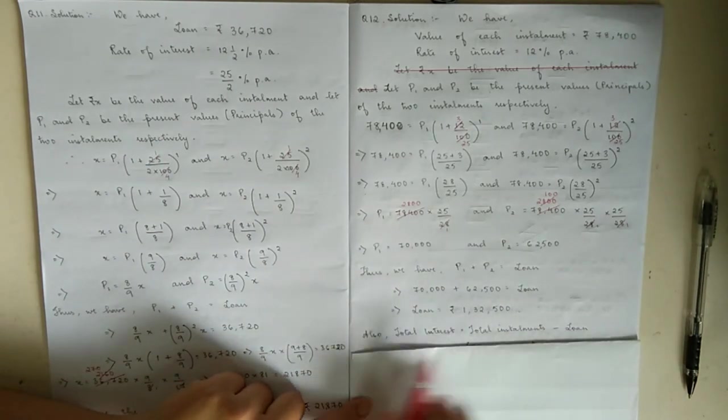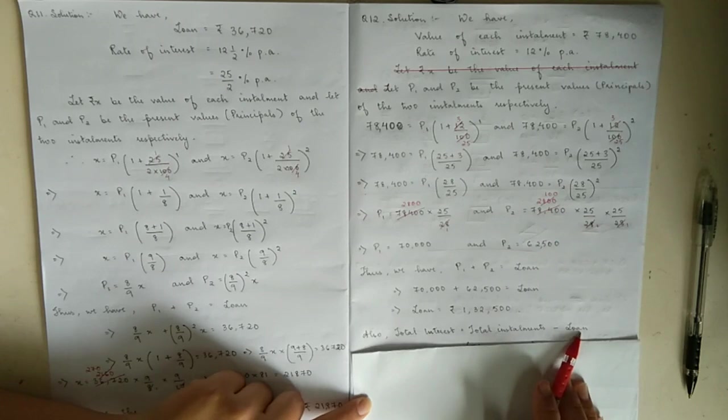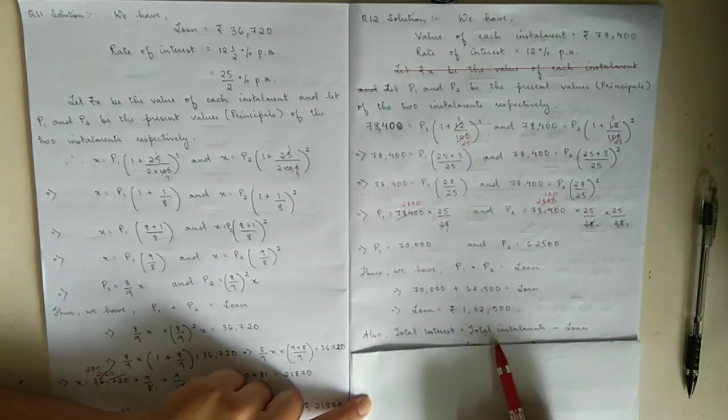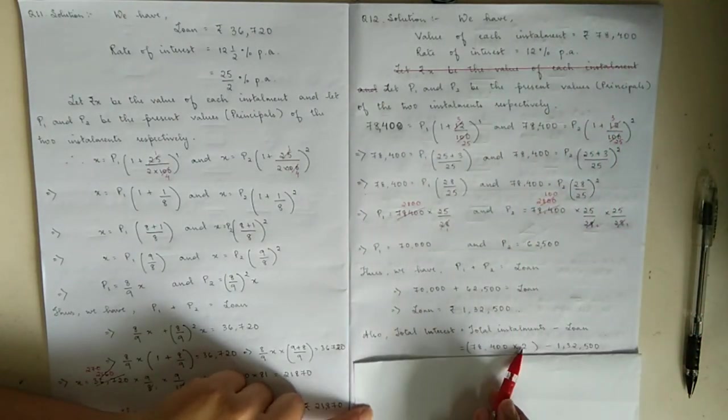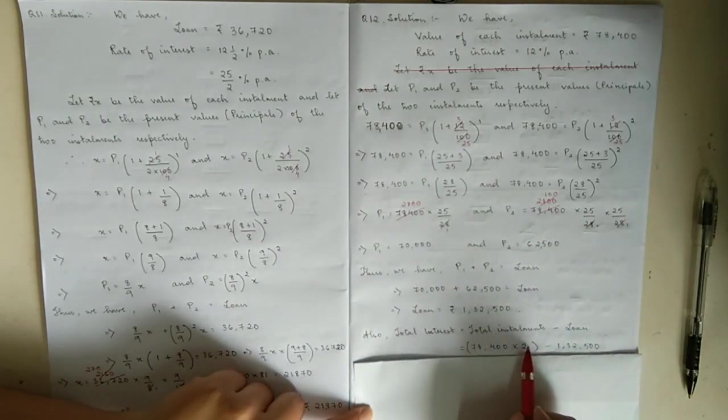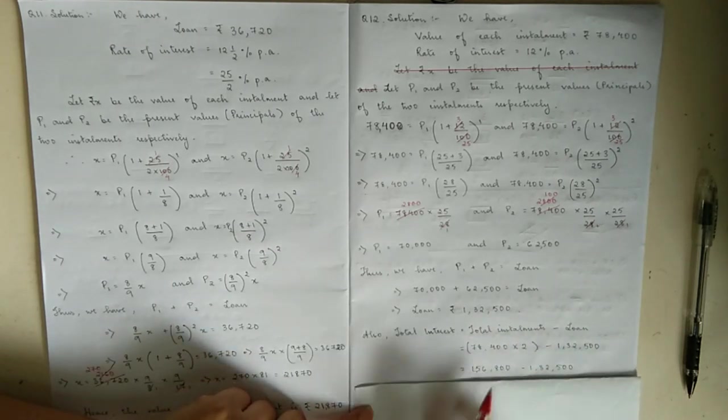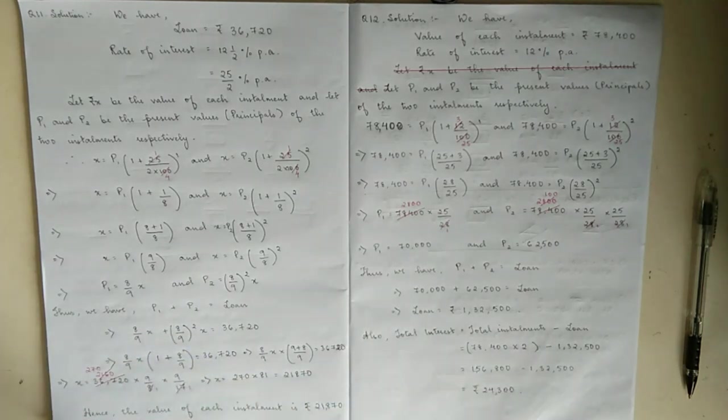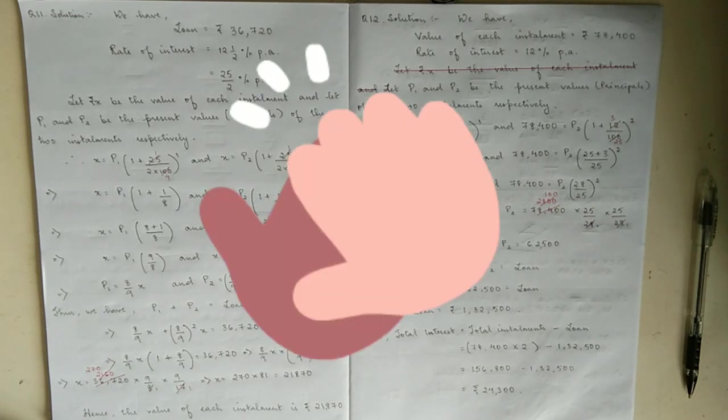So you have p1 and p2, therefore you can add them up to find the loan. When you add these two numbers together, you get 1,32,500 - that is the loan. In this question they're also asking you to find the total interest paid by him. Total interest equals total installments minus loan. Two installments means multiply the installment value by two, minus the loan. This gives you 1,56,800 minus 1,32,500, which equals rupees 24,300. That is the total interest paid by him. That's it, and I'll see you again in the next video. Bye.